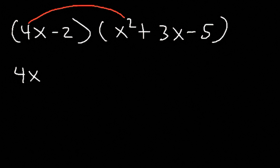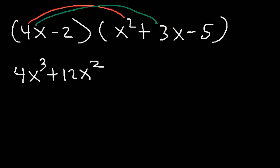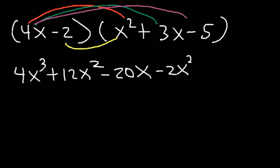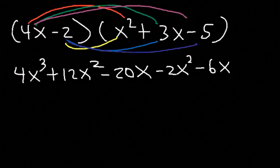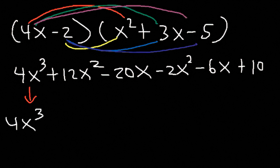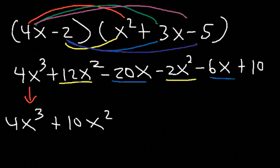4x times x squared is 4x cubed. 4x times 3x is 12x squared. 4x times negative 5 is negative 20x. Negative 2 times x squared is negative 2x squared. Negative 2 times 3x is negative 6x. And negative 2 times negative 5 is positive 10. Let me double check — everything looks good. Now let's combine like terms. 4x cubed is one of a kind, so rewrite it. 12 minus 2 is 10x squared. And negative 20 minus 6 is negative 26x plus 10.